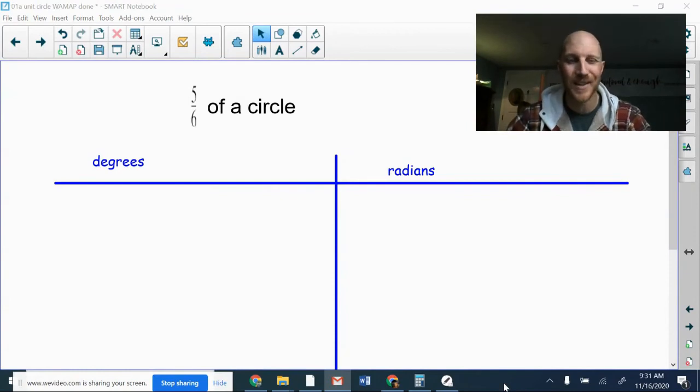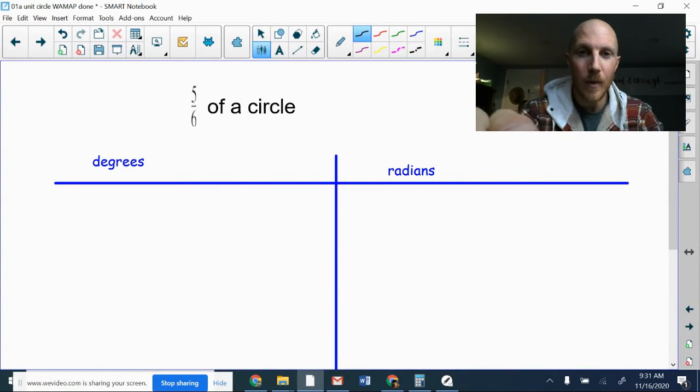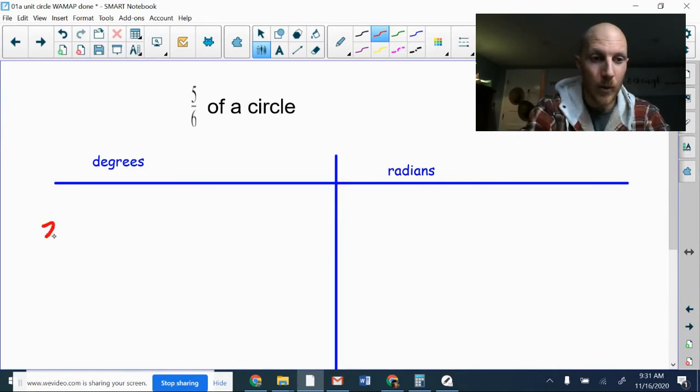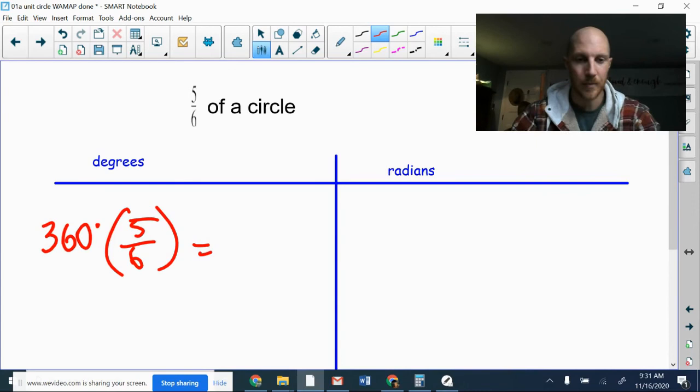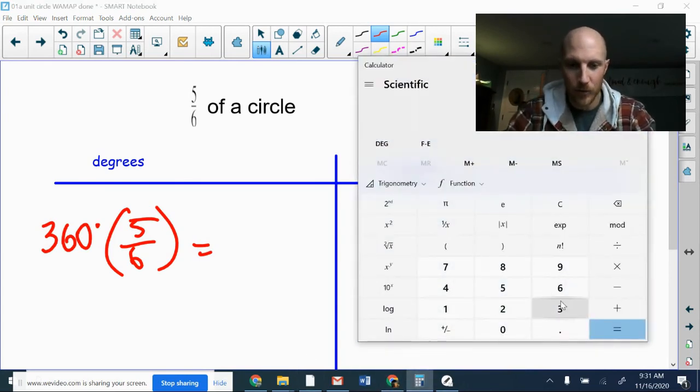Yeah, all right. What about five-sixths of a circle? Okay, well, in degrees, we know that a whole circle is 360 degrees. If I want five-sixths of that, I multiply by 5/6. And I can't do mental math here, so let's go 360 times 5 divided by 6 is 300.